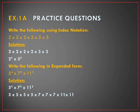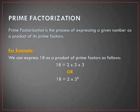The next question is the opposite of the first one. We need to write the given index notation form in expanded form, for which we check the index of each number. As the index of 5 is 4, we write 5 four times; as the index of 7 is 3, we write 7 three times; and as the index of 11 is 2, we write 11 two times. So the expanded form is 5 × 5 × 5 × 5 × 7 × 7 × 7 × 11 × 11.